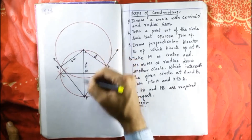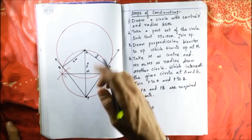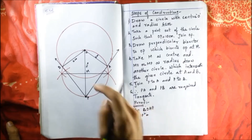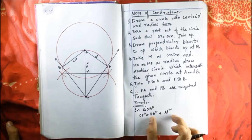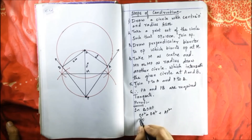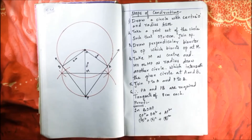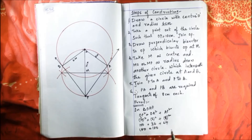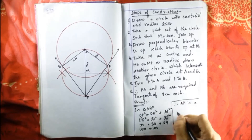Now for the proof. In triangle OAP, using the Pythagoras theorem, the hypotenuse is OP. So OP squared equals OA squared plus AP squared. OP is 10, so 10 squared equals 6 squared plus 8 squared, giving us 100 equals 36 plus 64, which is 100. Therefore AP is a tangent.